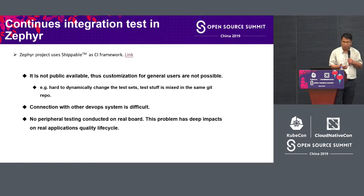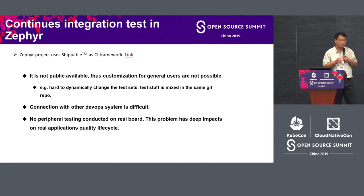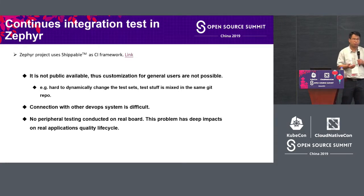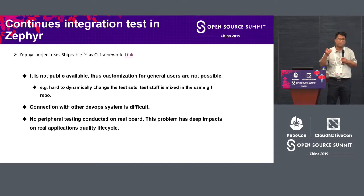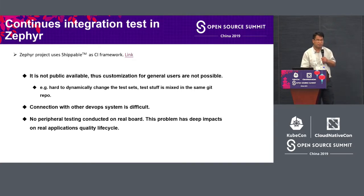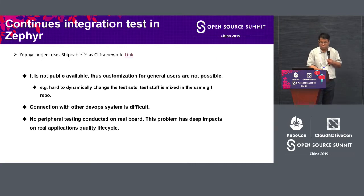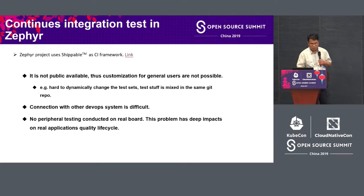As a chip maker or board maker, the key issue is that Shippable cannot run on a real board — you can only do it on a simulator or emulator. Realizing CI on a simulator takes more effort and time than testing on a real board. If you only do basic checks on the simulator, many issues will appear on the real board, which has deep impacts on the application's quality life cycle.